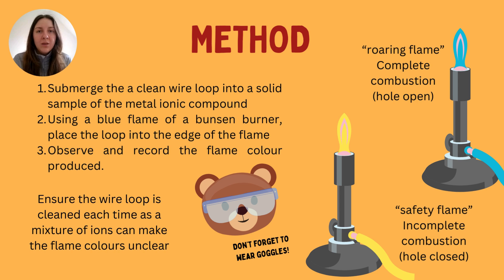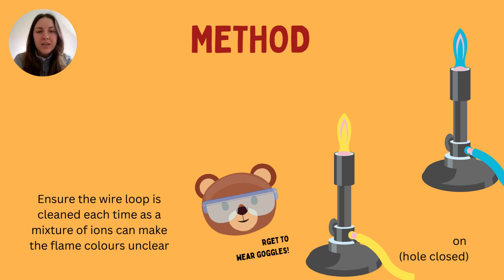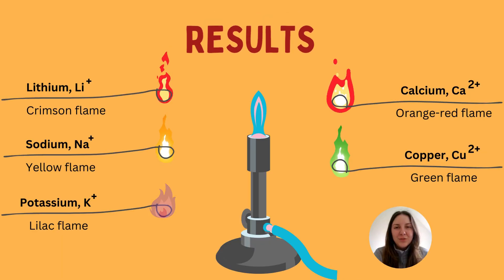Write down your observation and record it in a table. Be aware that every different metal ion has its own flame color, but if you have a mixture of ions together it can make the observation more challenging. Make sure you are cleaning your wire loop each time between tests — be very careful because it will be very hot, as it is a metal and conducts heat.